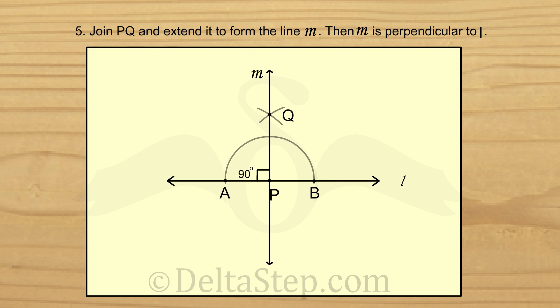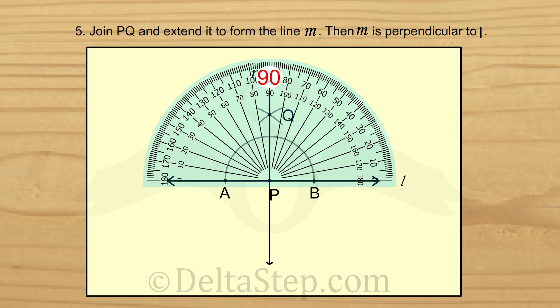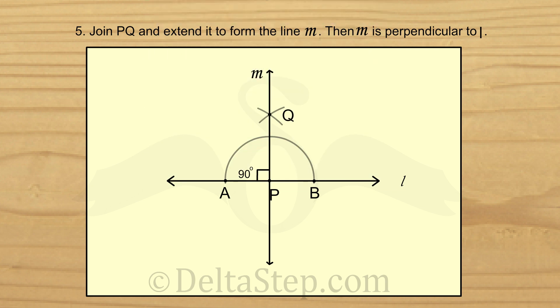Now, let us check with a protractor. We see that the angle is 90 degree. There is another neat trick to construct a perpendicular to a line at a given point. Although, we cannot use this trick always.